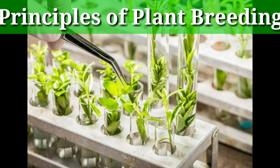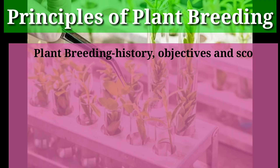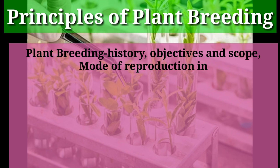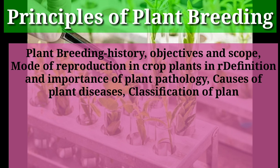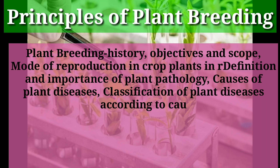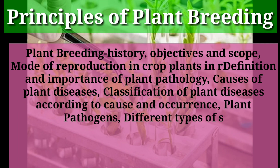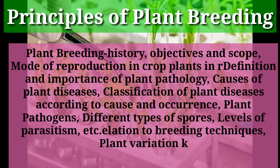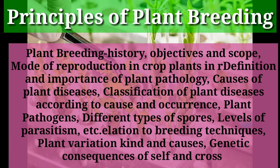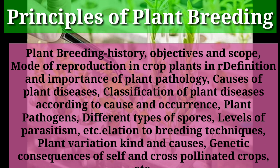Principles of plant breeding covers the history, objectives and scope of plant breeding, mode of reproduction in crop plants in relation to breeding techniques, plant variation — its kinds and causes — and genetic consequences of self and cross-pollinated crops.